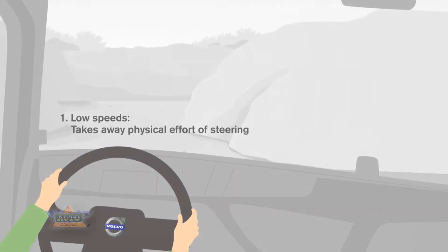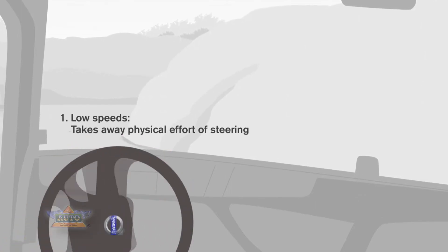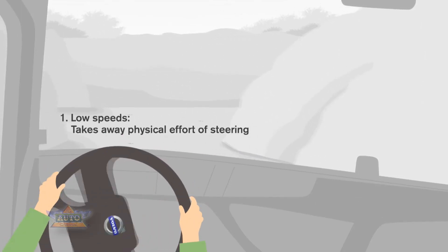Volvo Dynamic Steering has four main benefits. It takes away the physical effort of steering at low speeds. The driver can turn the steering wheel with very little effort.